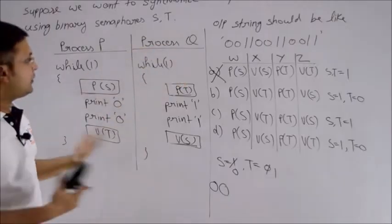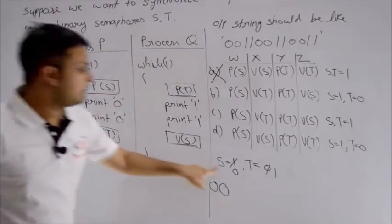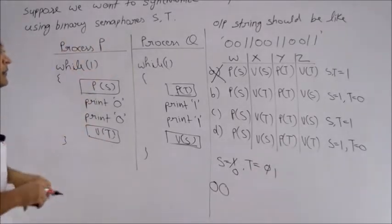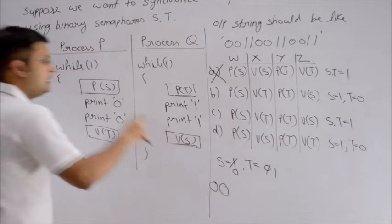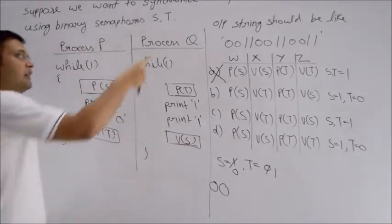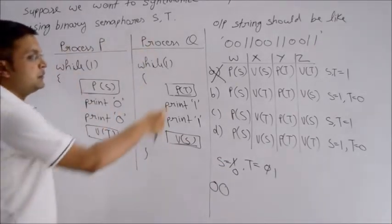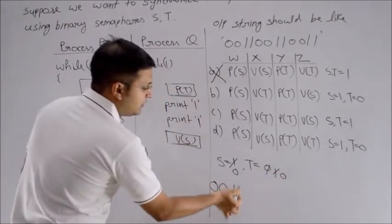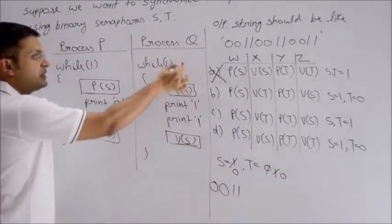Now you see, who can execute? S's value is 0, T's value is 1. P cannot execute again because S's value is 0, so you can't decrement it. Finally, charge goes to Q. Q decrements T making it 0, prints 1, 1. And in the same fashion, this repeats.